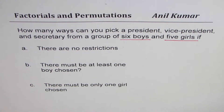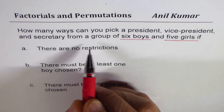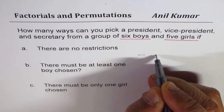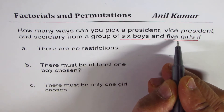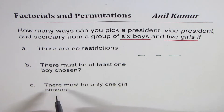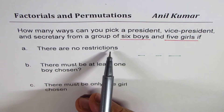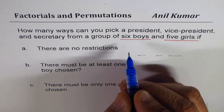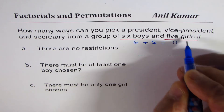I'm Atul Kumar and now we'll further explore factorials and permutations with a very interesting example with different conditions. How many ways can you pick a president, vice president, and secretary from a group of six boys and five girls? We have three positions to fill. Six plus five means we have eleven candidates.